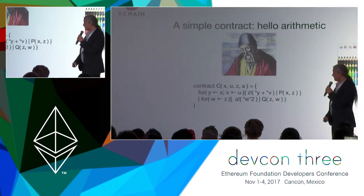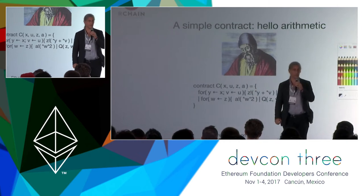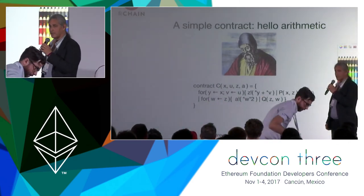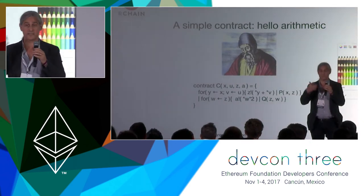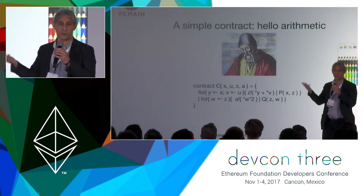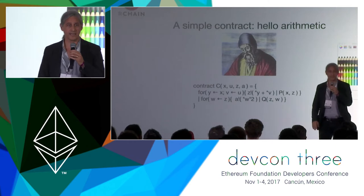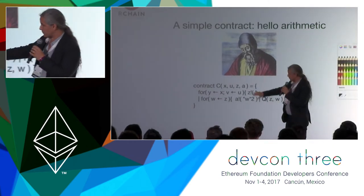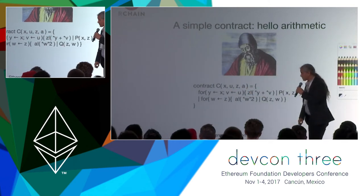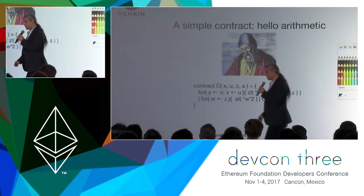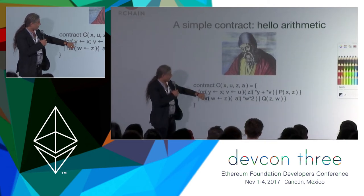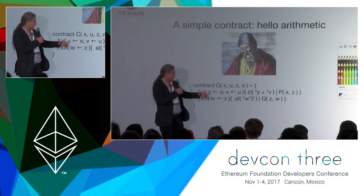This contract is parametric in a set of channels or ports — Rolang is a channel-based computational model. In Rolang, there are basically only two things: ports and channels — we use those synonymously, also called names — and there are processes that use ports, channels, and names to communicate. That's the entire ontology in this computational universe. Contracts are just processes that are parametric in some ports or channels. This contract C is parametric in four channels and does a couple of things in parallel.